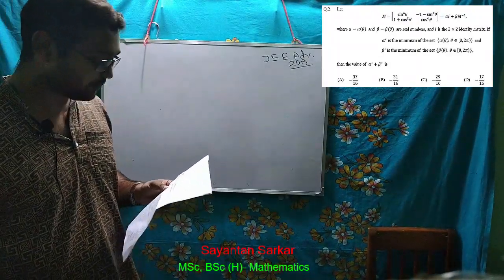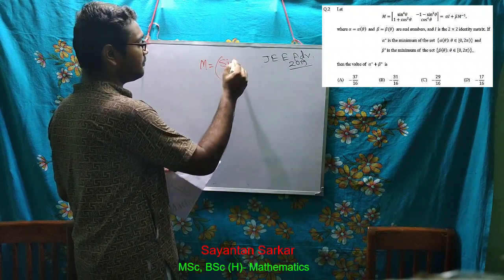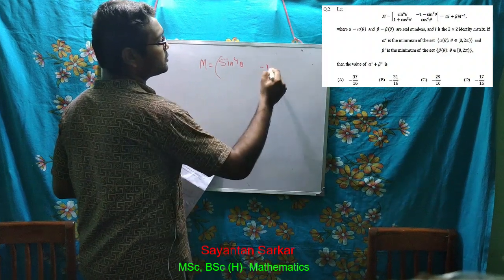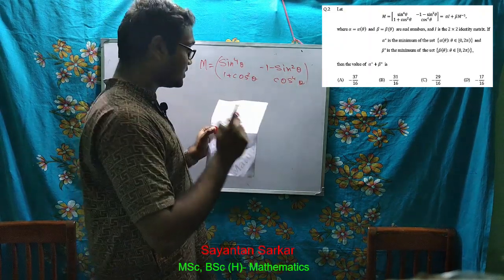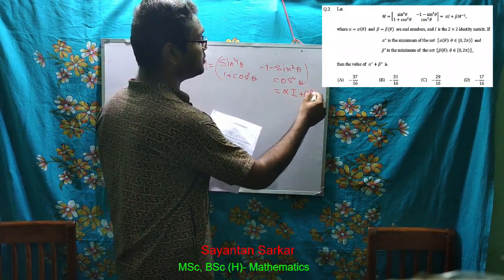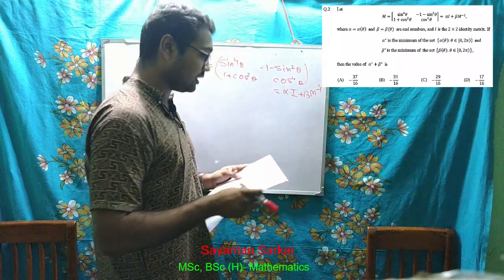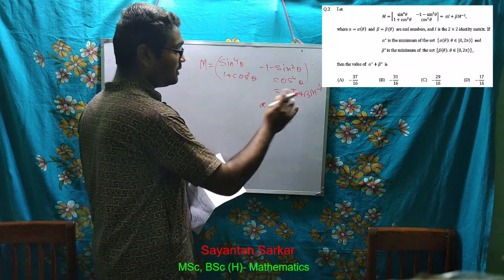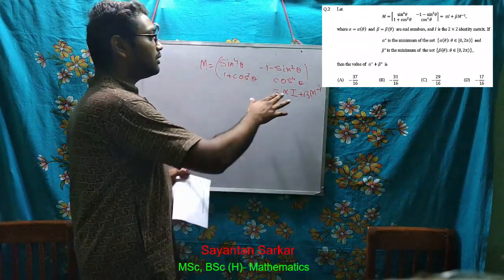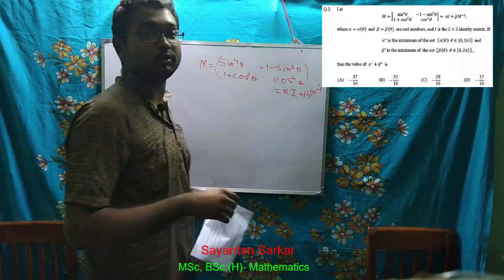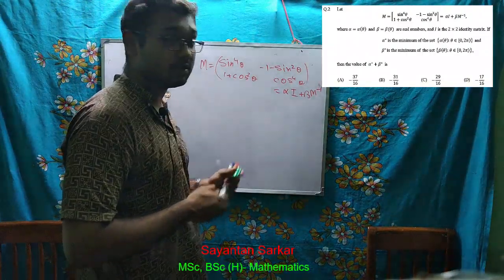As you can see from the question, we have to deal with a special matrix M equal to: sin⁴θ, -1-sin²θ in the first row; 1+cos²θ, cos⁴θ in the second row. They say this matrix is equal to α·I minus β·M inverse. We have to find the minimum values of α and β. It is clear that these depend on θ only, because the matrix is dependent on θ.